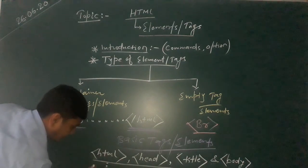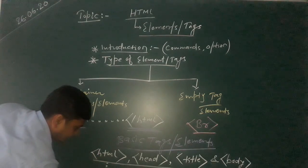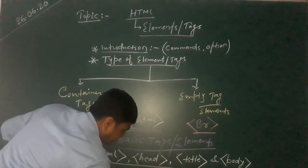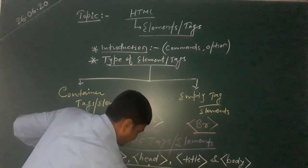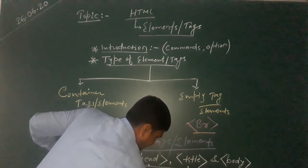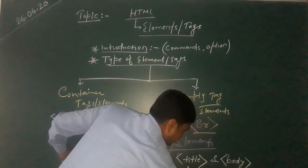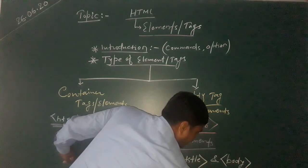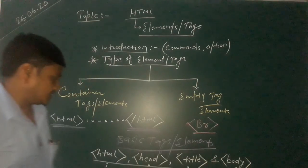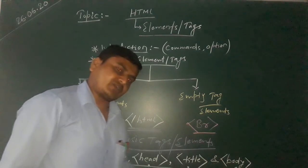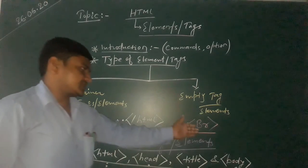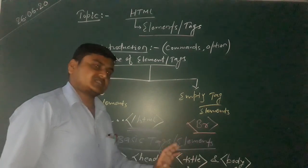You can see examples such as the HTML tag, head tag, title tag, and body closing tag. All of these basic tags are examples of container tags, meaning they all have two positions — opening and closing. In the empty tags category, we will discuss more in further videos.